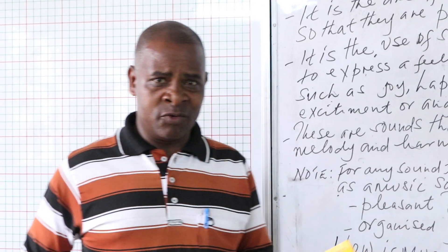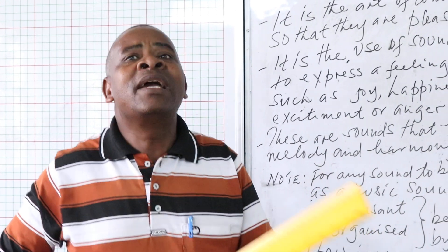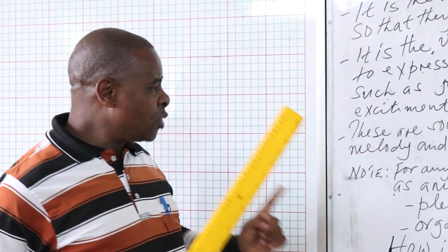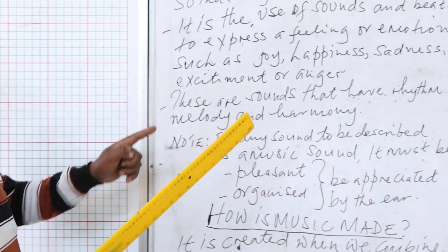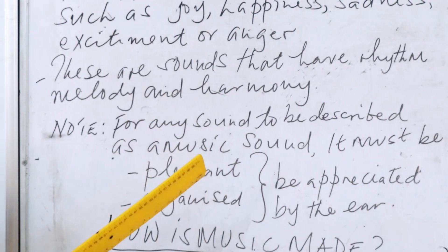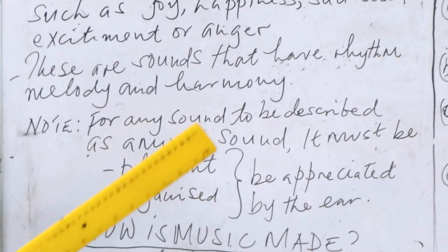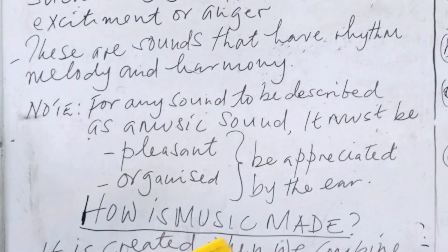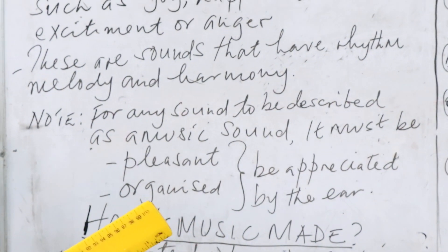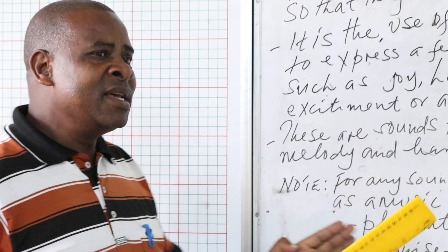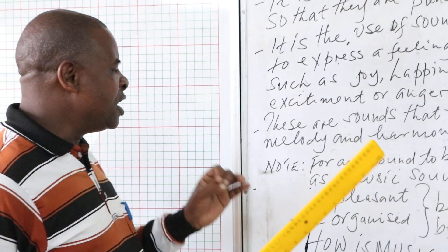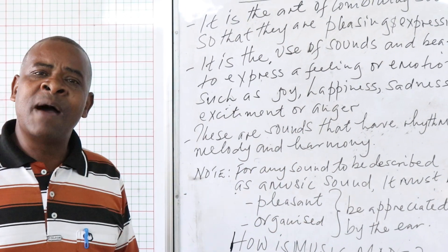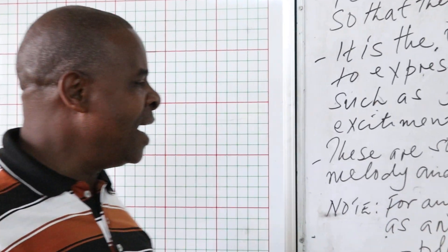Now, we have talked of sound, because sound is anything that you hear. And remember, not all sounds are musical. That's why we need to know that for any sound to be described as a musical sound, it must be: one, pleasant; two, organized. For any sound to be described as a musical sound, it must be pleasant, organized, and above all, appreciated by the ear.